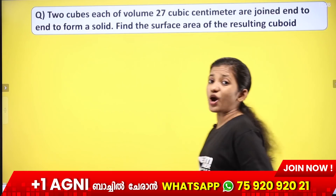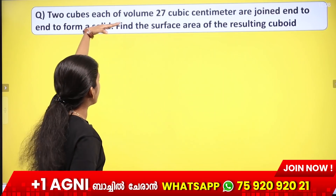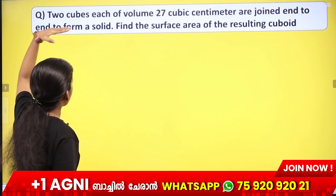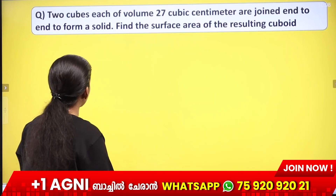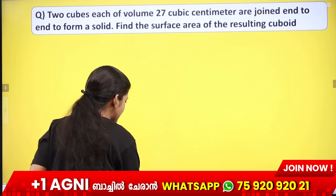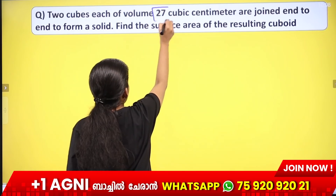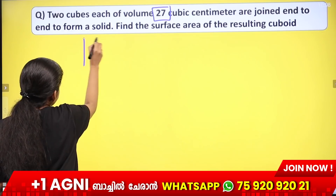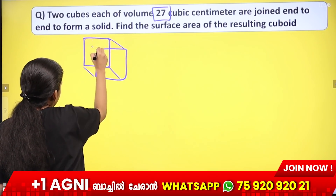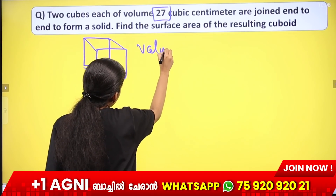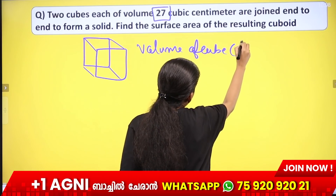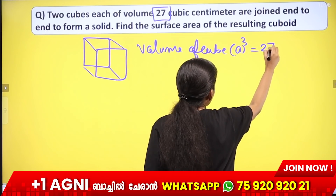First problem: Two cubes of 27 cubic centimeters are joined end to end to form a solid. Find the surface area of the resulting cuboid. Volume of cube = 27 cubic centimeters.